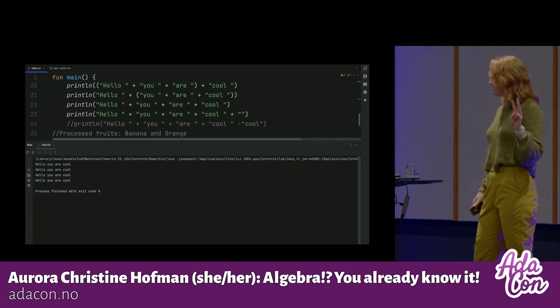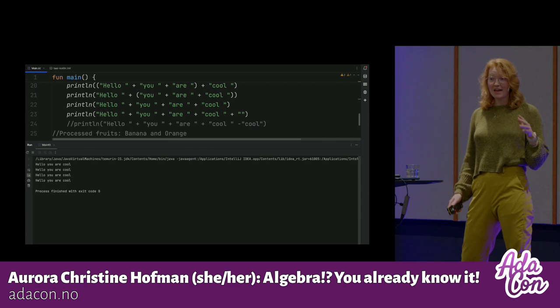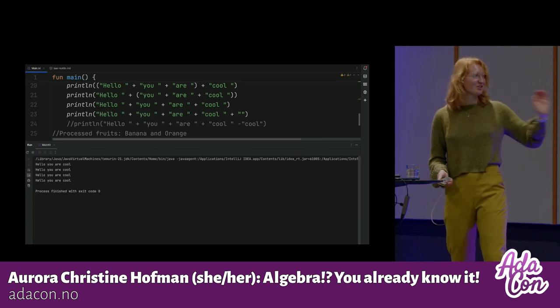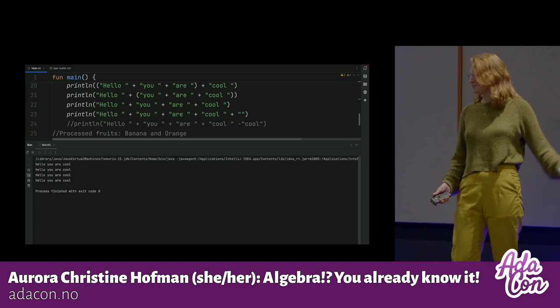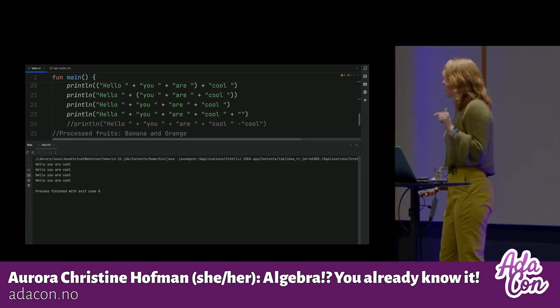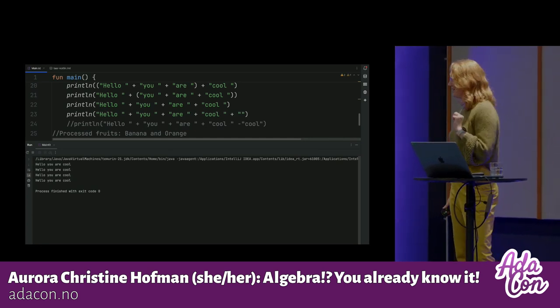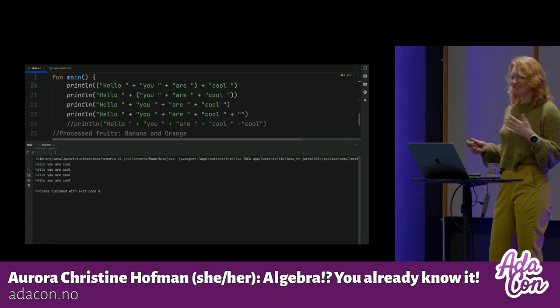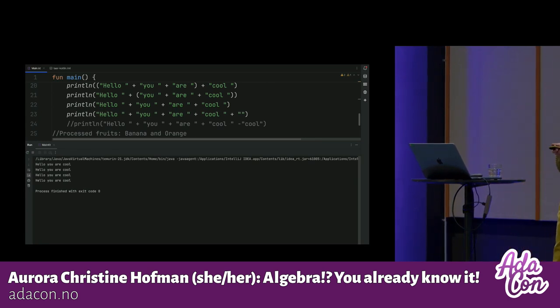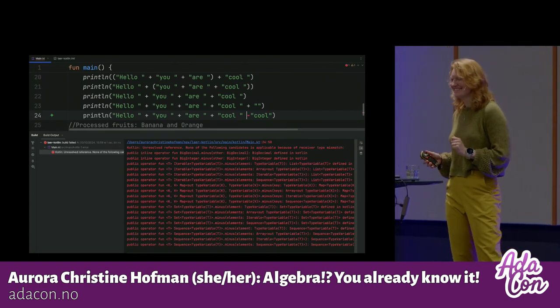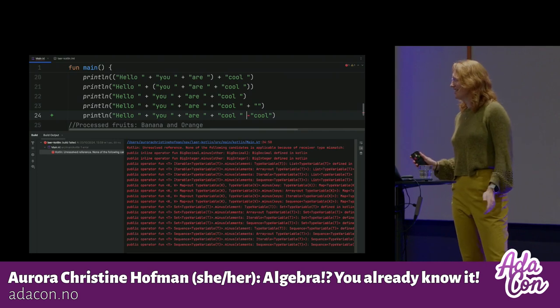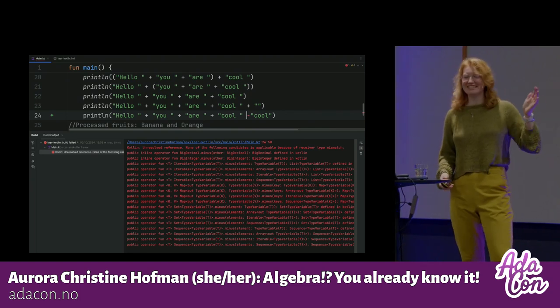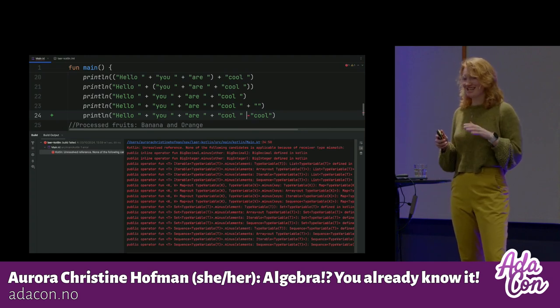Now we check for this third condition. Do we have an identity element? And with strings, actually, we do. We can use the empty string. We can add an empty string, and nothing really happens. So this is what you see. Again, we have hello, you are cool. But you can also see that I've commented out a line. Because what's up with the inverse? How do we kind of get back, remove a word, or something like that? If I try to run this code uncommented, it looks like this. Because we don't really have a sense of minus cool, or inverse coolness. It doesn't really exist. So here we see that strings with addition of two strings is not a group.